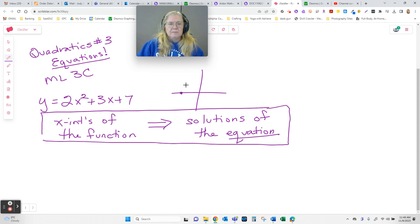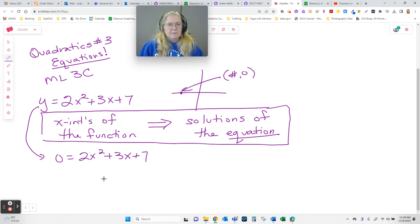Now if you think about the x-intercepts, every x-intercept is special because it has a y-value of 0. So y-value of 0 means this function looks like 0 = 2x² + 3x + 7 when I go to solve it to find my x-intercepts. Solutions to the equation give me the x-intercepts of the function.